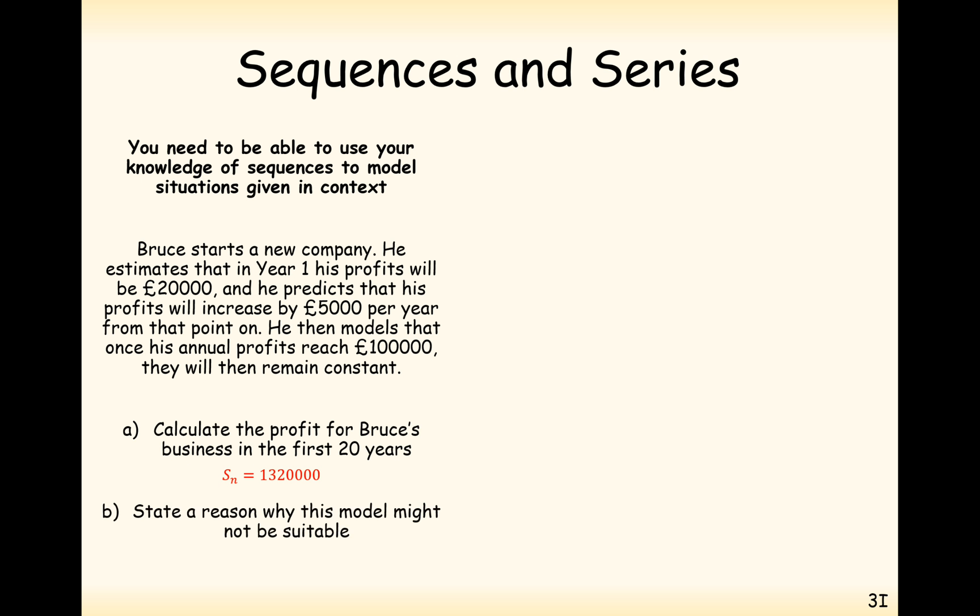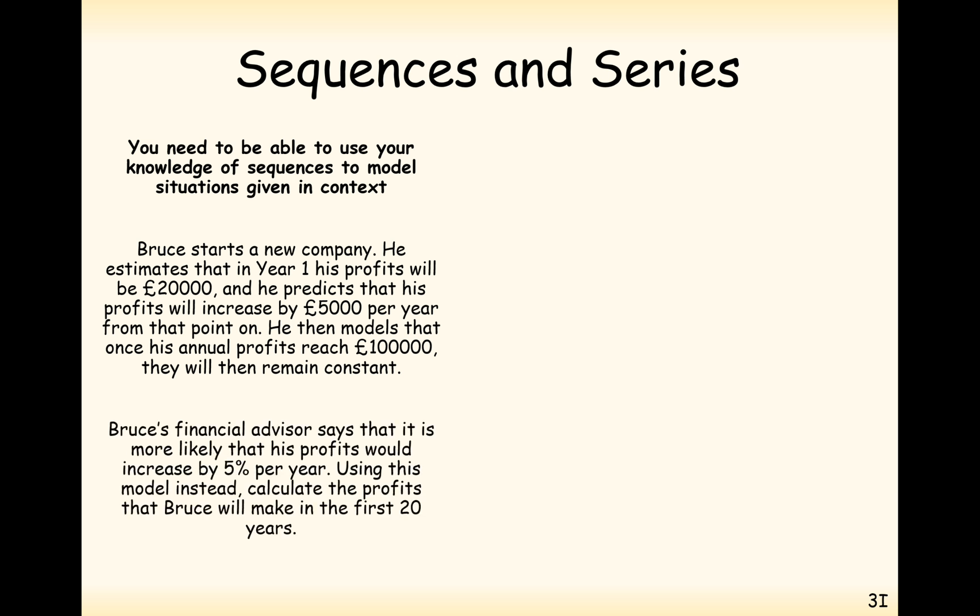Part B states a reason why this model might not be suitable. A possible reason would be that it is unlikely that Bruce's profits will increase by the exact same amount every year. Now we've got a new part of the question. Bruce's financial advisor says it is more likely that his profits will increase by 5% per year. Using this model instead, calculate the profits that Bruce will make in the first 20 years.